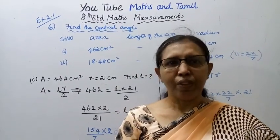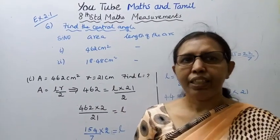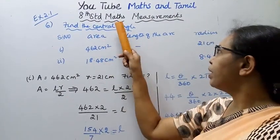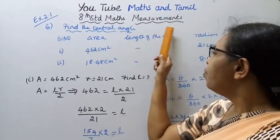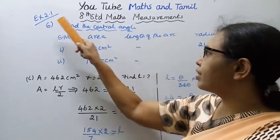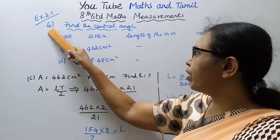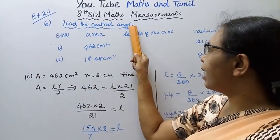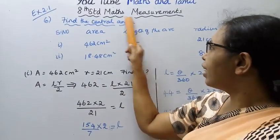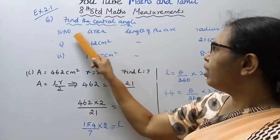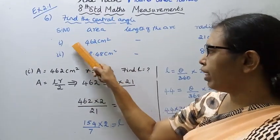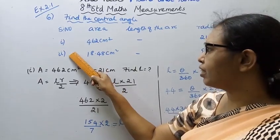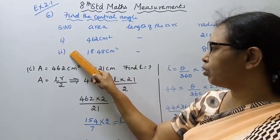Hello students, welcome to Max and Tumble channel. This is Exercise 2.1, and we are going to find the central angle — first subdivision and second subdivision.